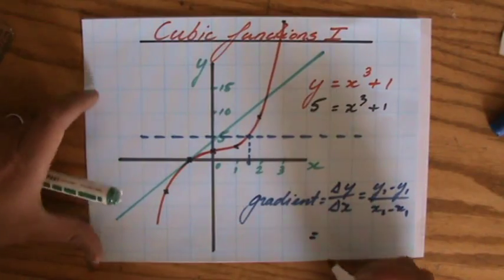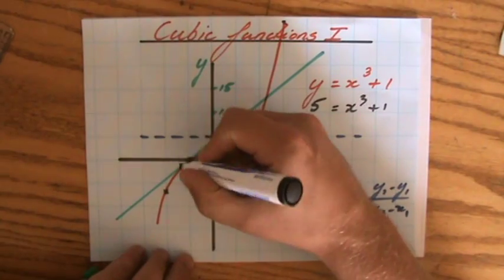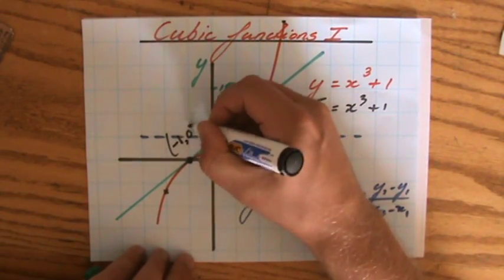So you find two suitable coordinates, and then you can calculate the gradient. Well, the first coordinate is always given to you, that's this one. What is the coordinate? Minus 1, 0.